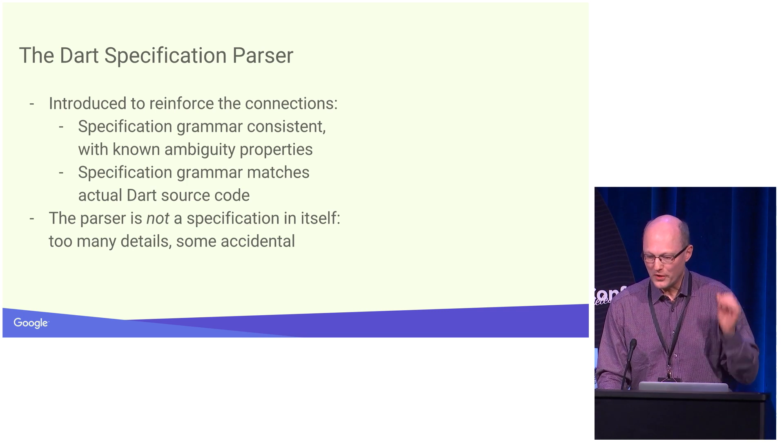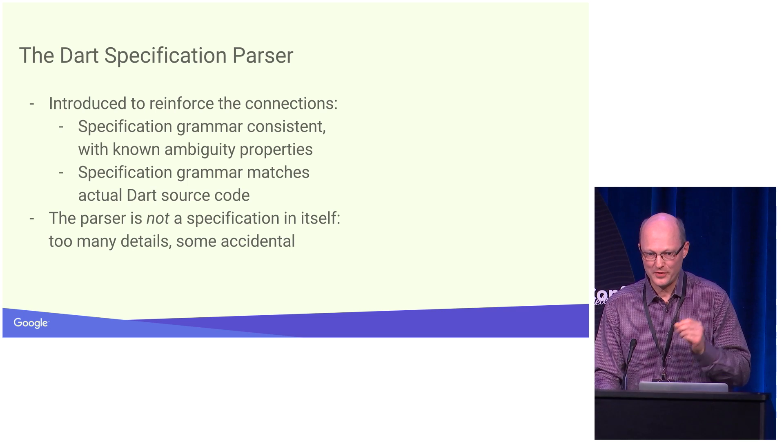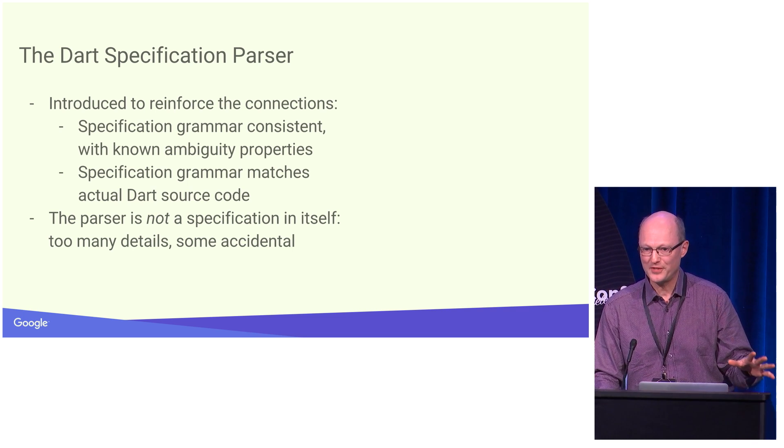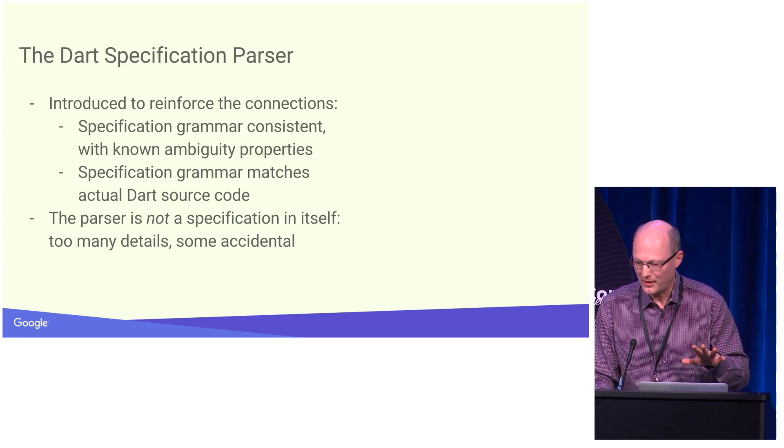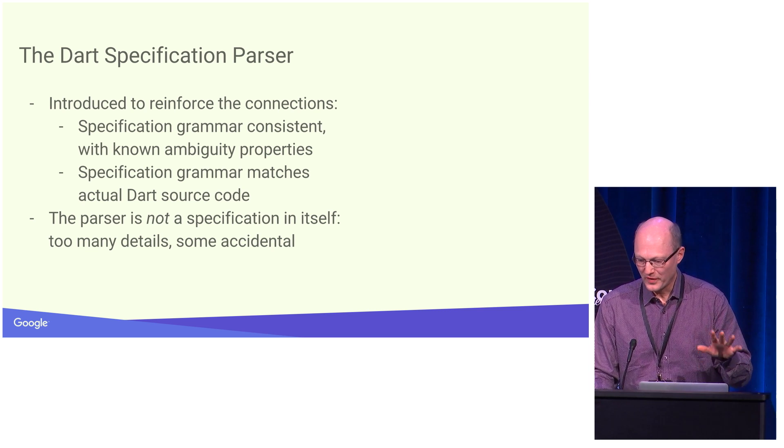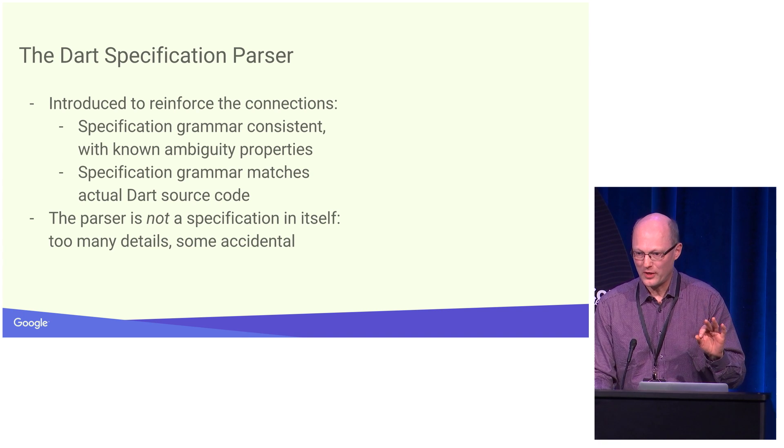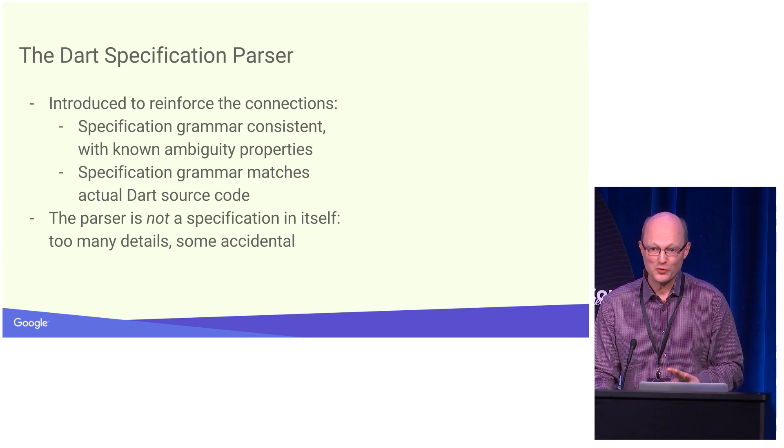We want to know that the grammar is itself consistent. For instance, that it has ambiguity properties that we know about. We're not going to get rid of all the ambiguities, we're going to say how to resolve them.